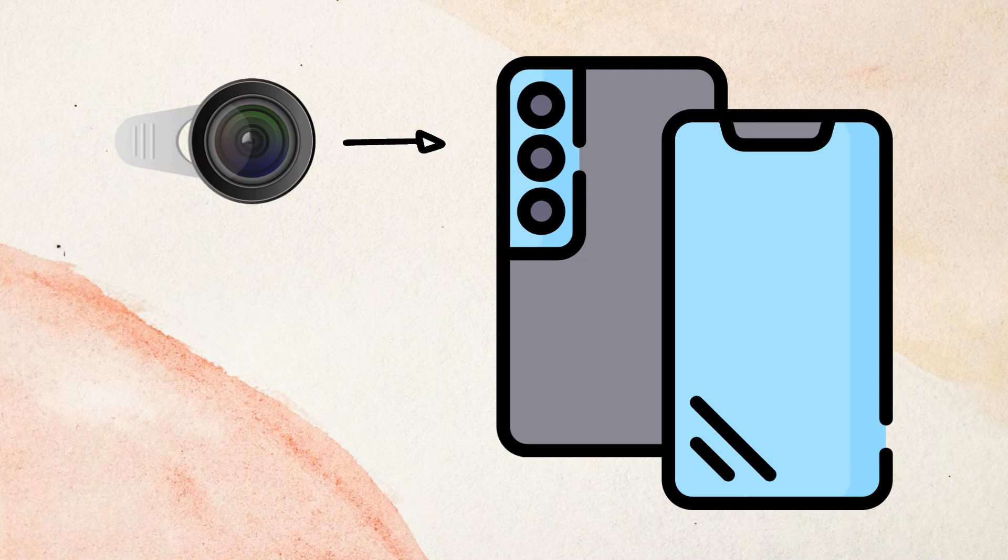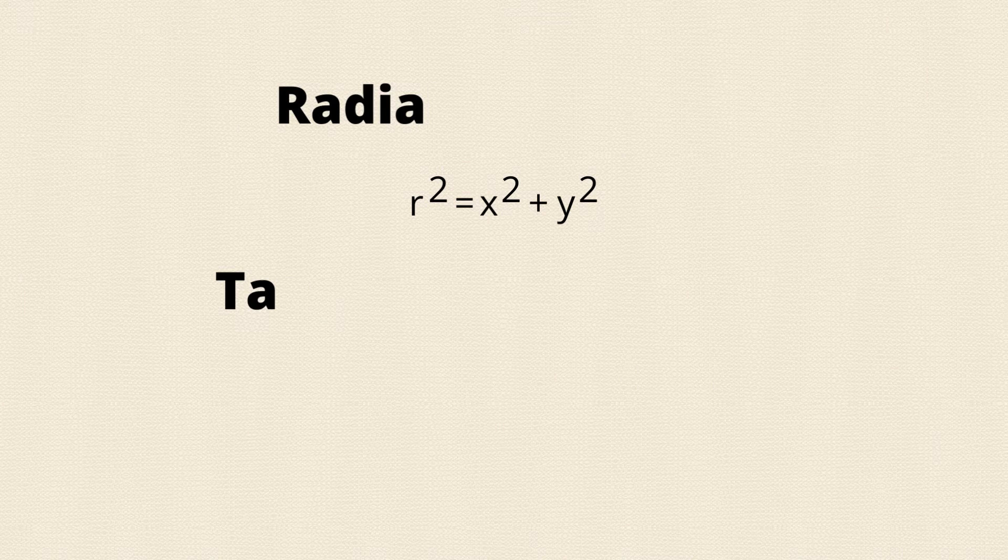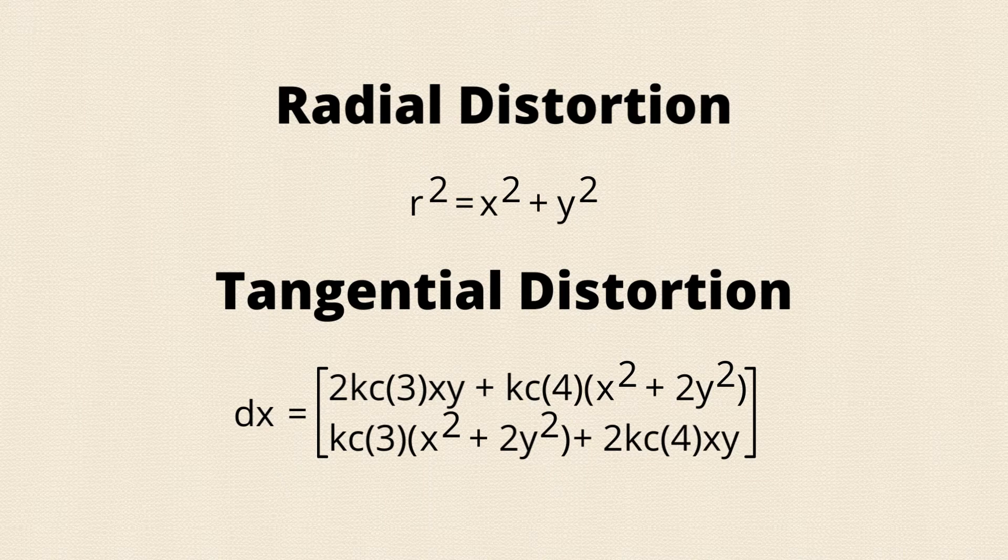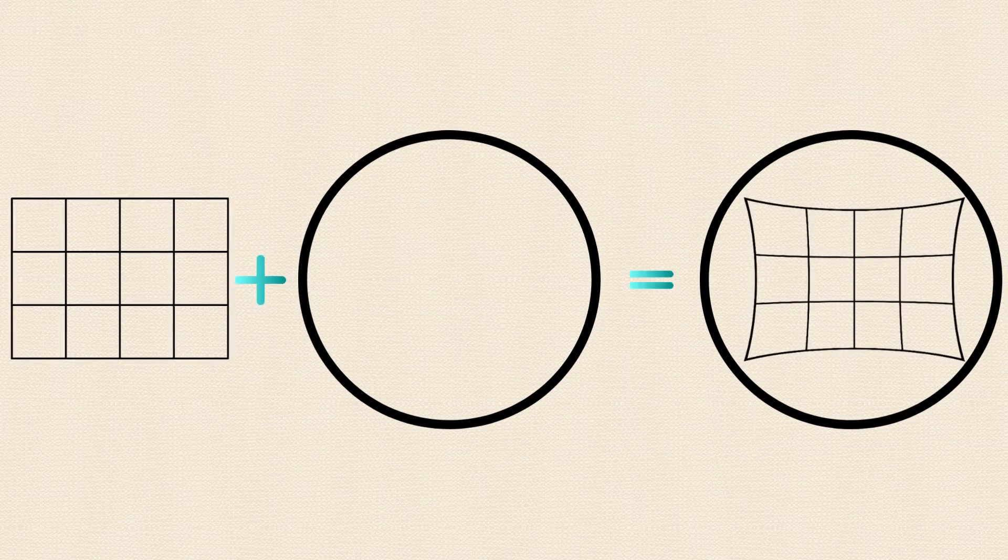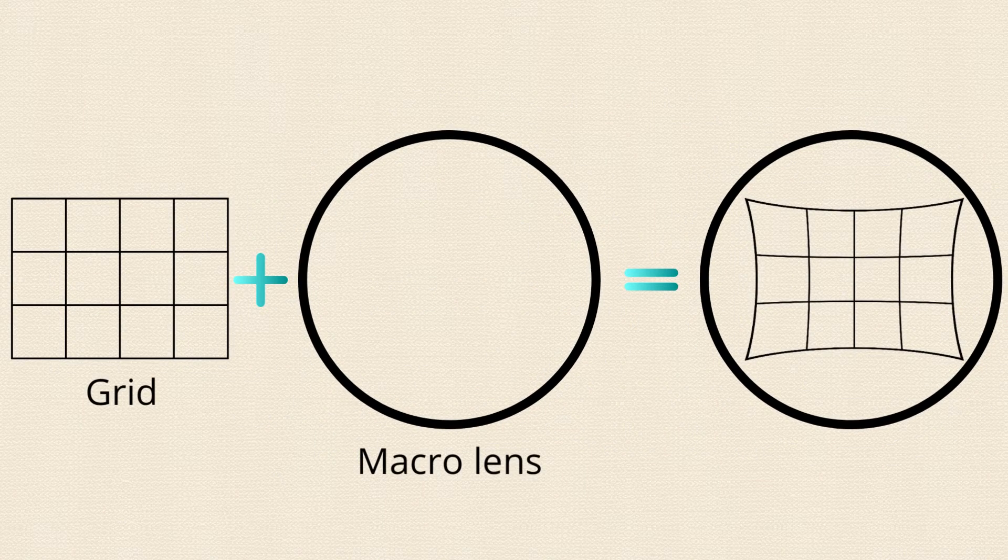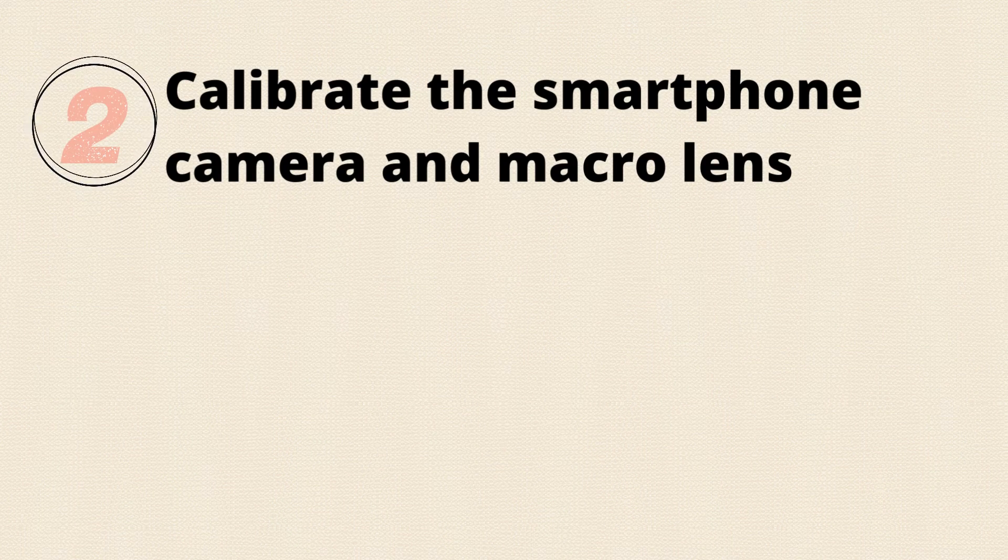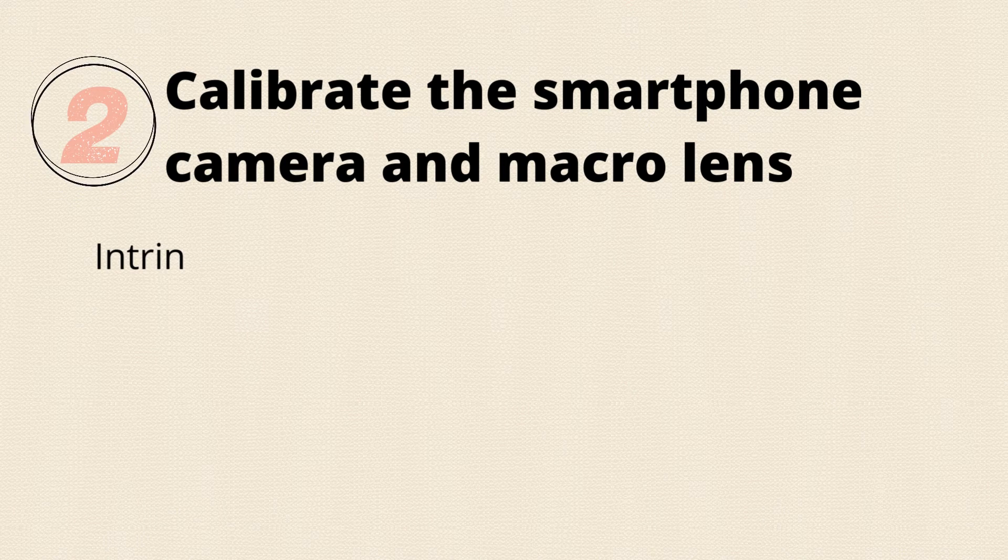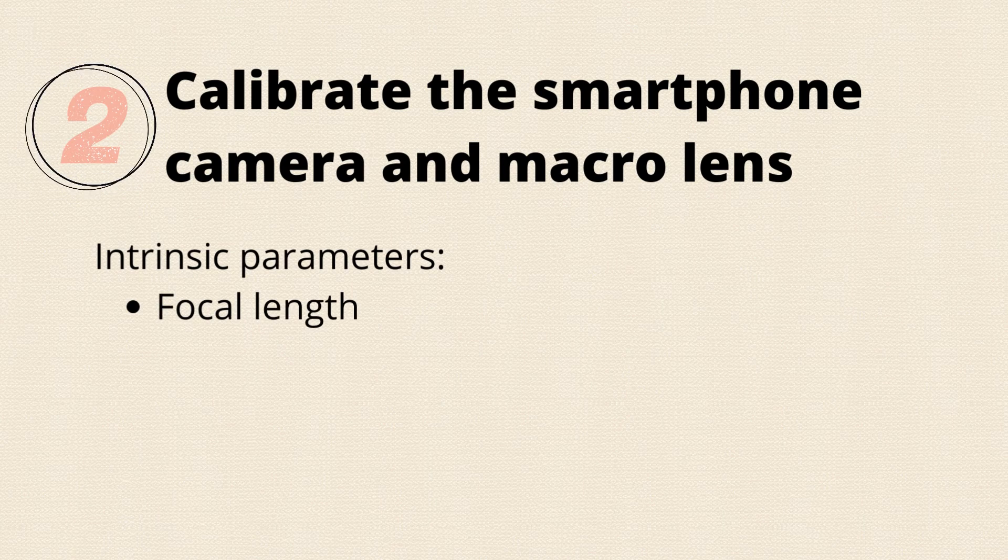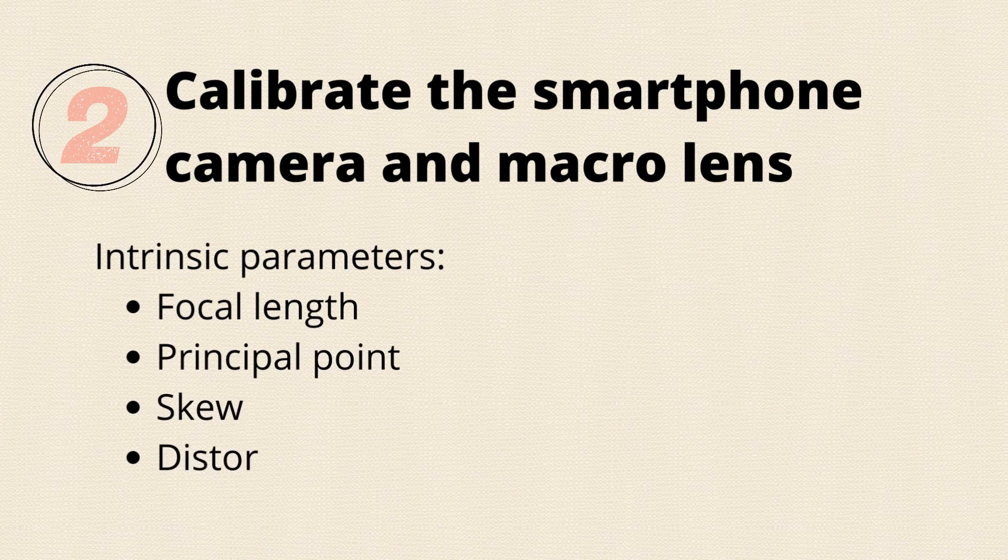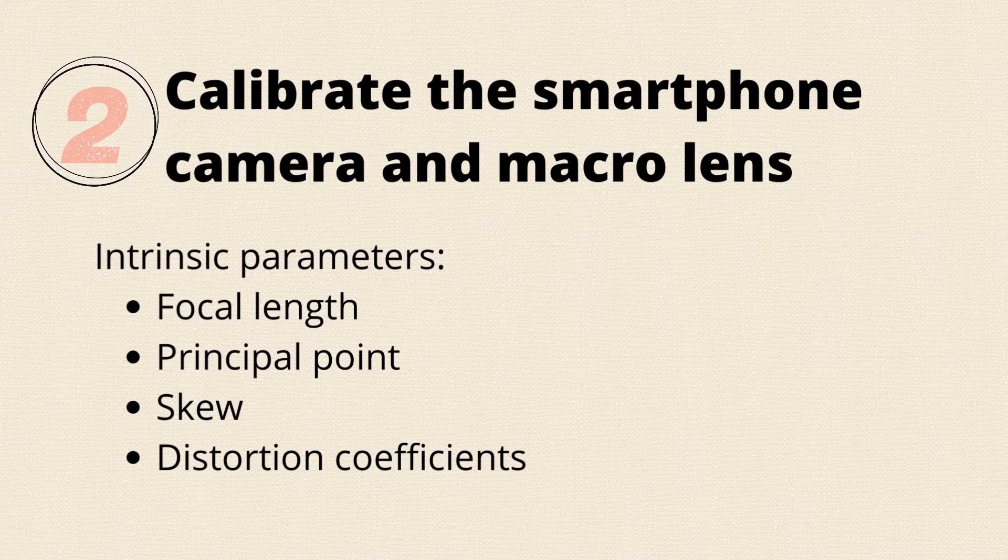In using macrolenses, there is an effect of radial and tangential distortion, which shows a pincushion distortion that needs to be corrected. Therefore, the second objective is to properly calibrate the smartphone camera with the macrolens to obtain the parameters including the distortion coefficients to be able to undistort the images.